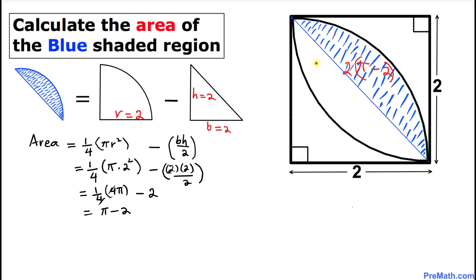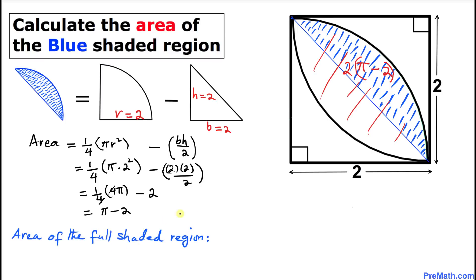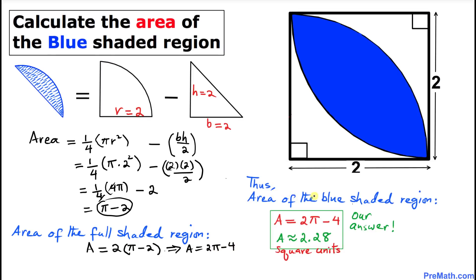Since the two parts are symmetric, we multiply by 2 to get the full shaded region. So the total area A equals 2 times (π minus 2), which gives A equals 2π minus 4. Therefore, the area of the blue shaded region is 2π − 4, approximately equal to 2.28 square units. Thanks for watching, and please don't forget to subscribe to my channel for more exciting videos!